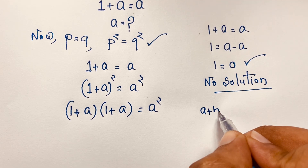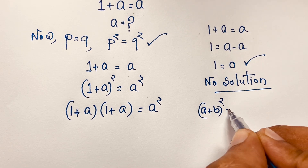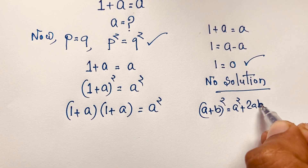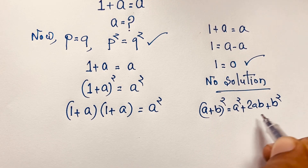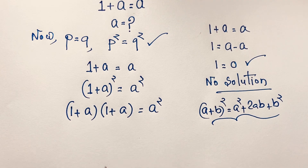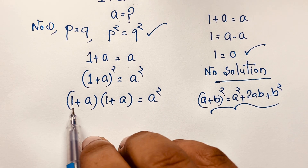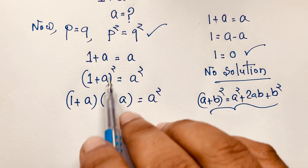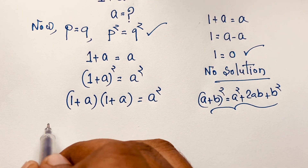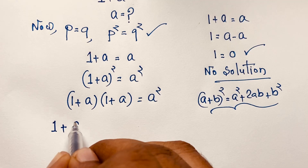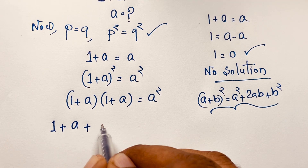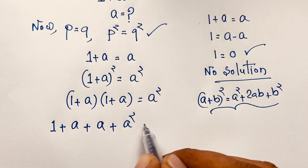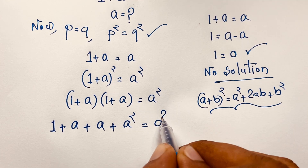You can apply the formula a plus b whole to the power 2 equals a squared plus 2ab plus b squared. Expanding 1 plus a times 1 plus a: 1 times 1 is 1, plus 1 times a is a, plus 1 times a is a, plus a times a is a squared, equals a to the power 2.